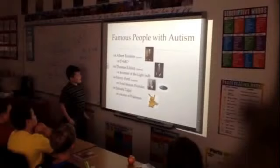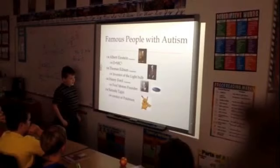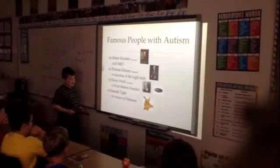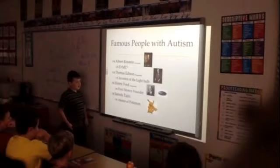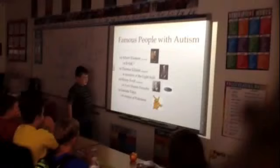In fact, there are some famous people with autism. Albert Einstein is suspected to have autism. He's the creator of nuclear bombs. He found out E equals MC squared, faster than the speed of light. Thomas Edison was also suspected to have autism. He was the inventor of the light bulb. If he wasn't born, we probably wouldn't have lights.